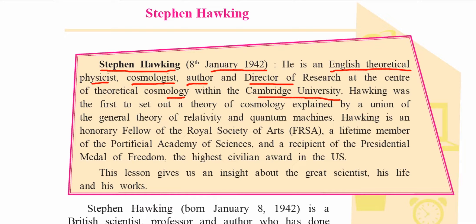Hawking was the first to set out a theory of cosmology explained by a union of the general theory of relativity and quantum mechanics. Quantum mechanics involves the collective motion following the laws of quantum mechanics. These are technical terms — you should know the spellings and the area they belong to.